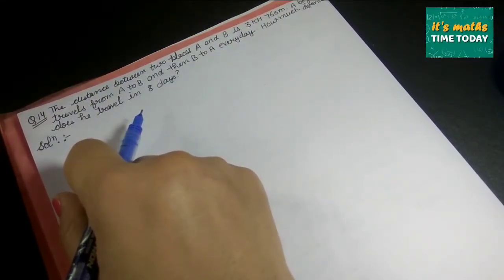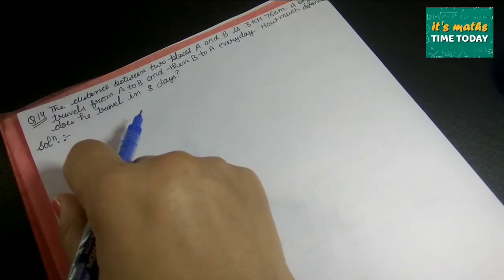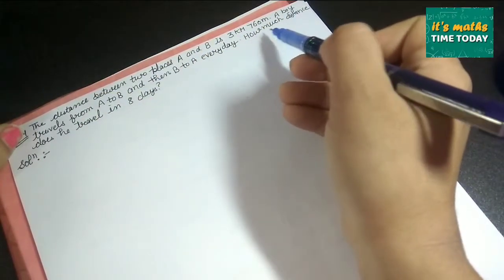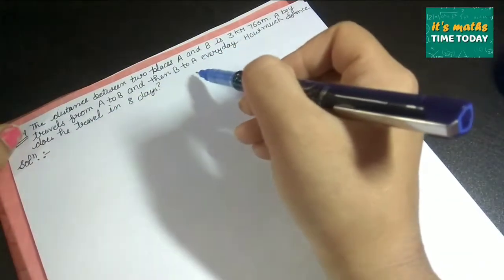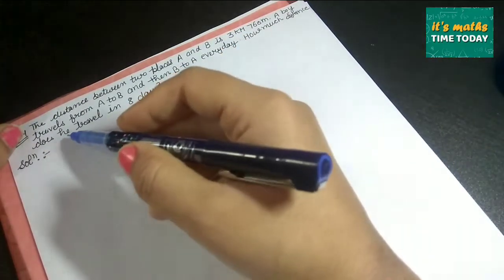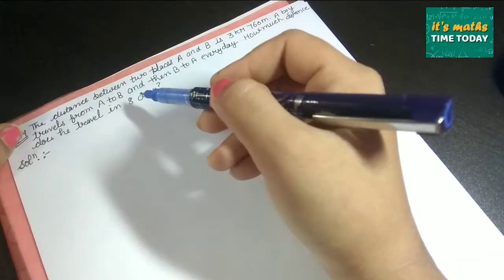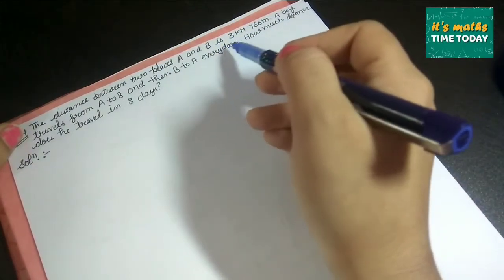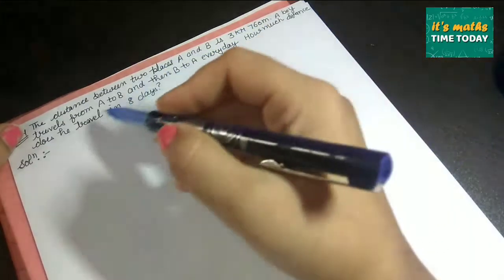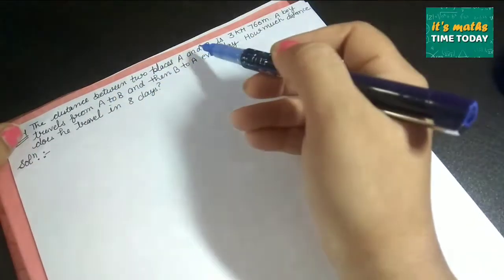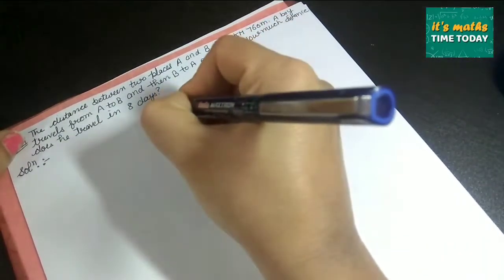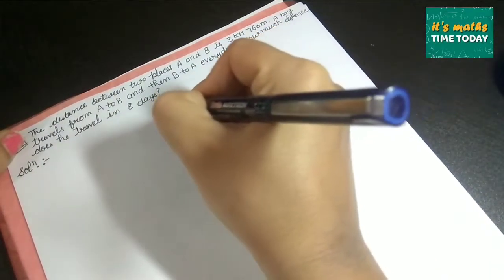Hello and welcome to my channel. It's math time. Today, question number 14: The distance between two places A and B is 3 kilometers 760 meters. A boy travels from A to B and then B to A every day. How much distance does he travel in eight days? So we have distance between A and B as 3 km 760 m, and the boy travels A to B then B to A daily.